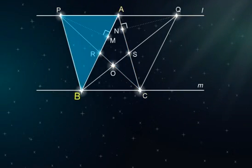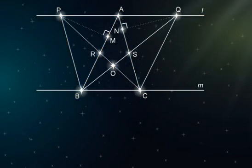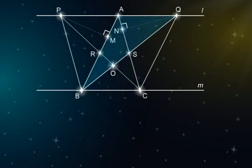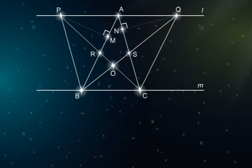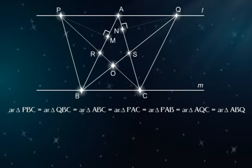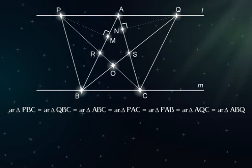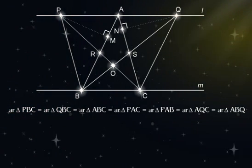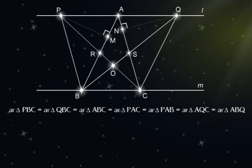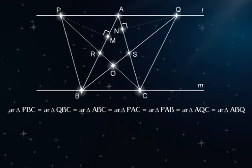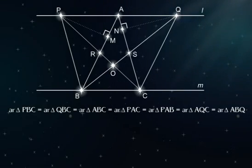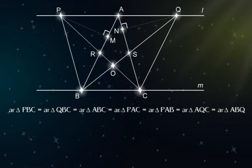Also look at triangles PAB, AQC, and ABQ. All these triangles are equal in area. The interesting thing is not that all these triangles are equal in area, but the fact that we can tell so without doing any calculation.